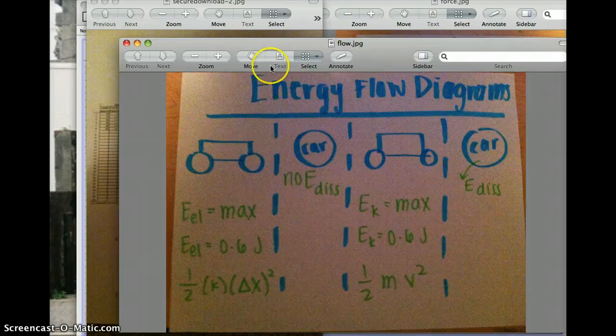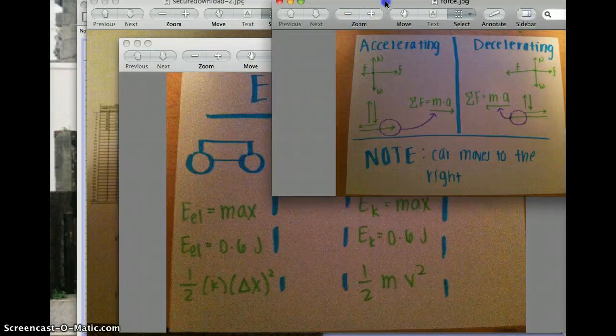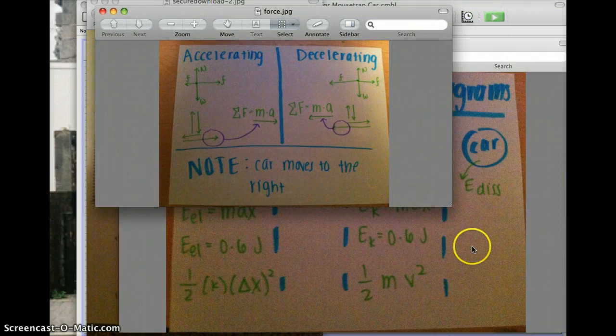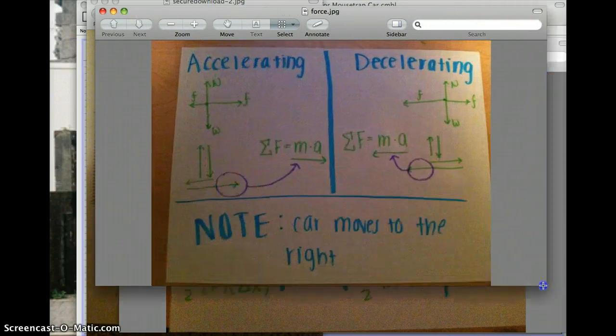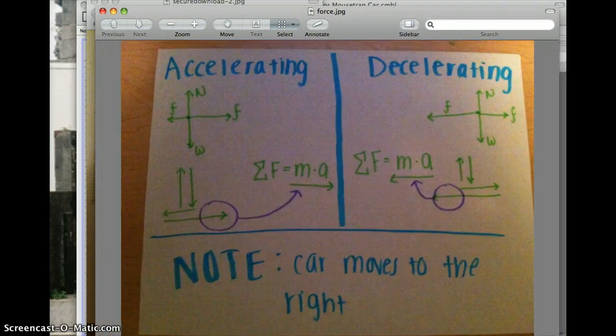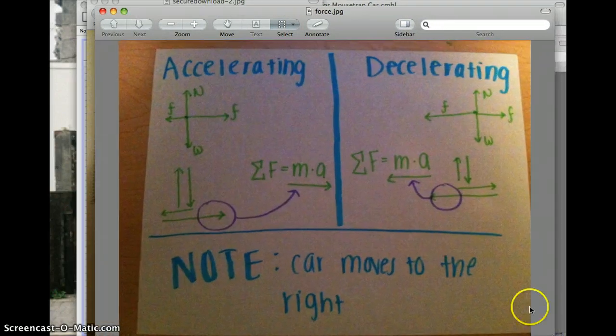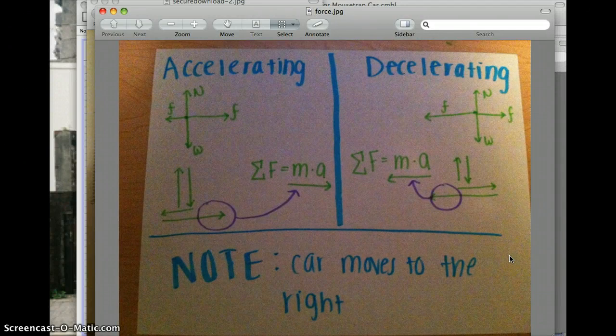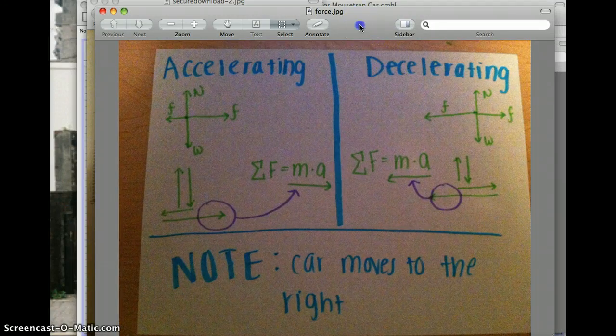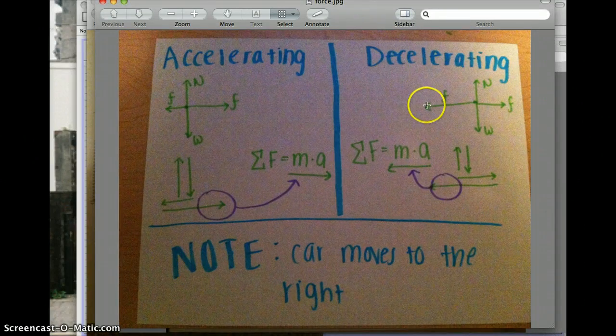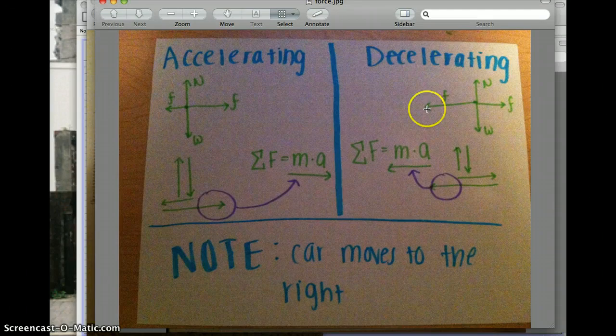So for my force diagrams, I have my car accelerating, and I use someone else's data for the decelerating portion because my car stopped after about a meter. For the accelerating part we have a normal force upward and the force of gravity going downward.